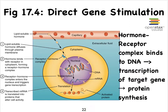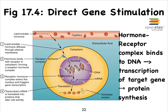Direct gene activation is a fairly straightforward process. Near the capillary at the top of the picture, either a steroid or thyroid hormone can easily leave the capillary and cross the cell membrane because we're dealing with a lipid-soluble hormone. Inside the cell, in the cytoplasm, there is a receptor specific for this hormone that will bind to the hormone, forming a receptor-hormone complex. This complex can easily cross the nuclear envelope, particularly through the nuclear pores, and once inside the nucleus, the complex binds to a particular spot on the DNA, whose sequence of bases codes for a particular gene.